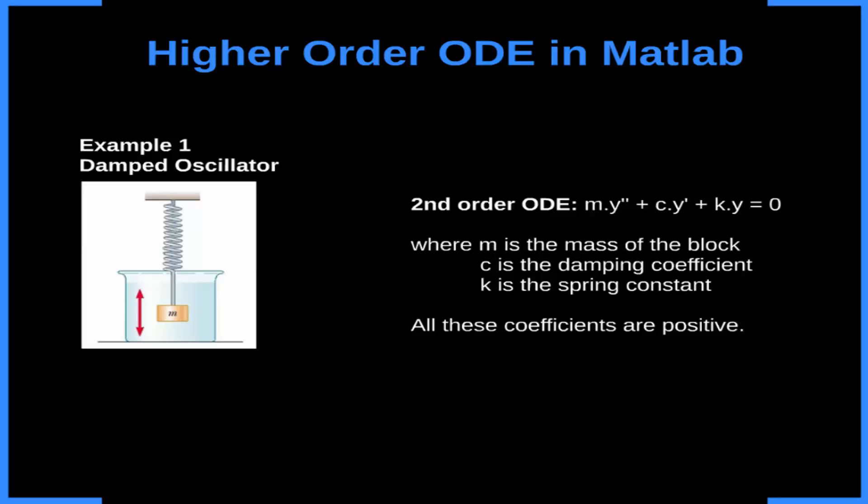For example, let's take into consideration the damped oscillator. Consider this equation as the behavior of the system where m is the mass of the block, c is the damping coefficient, and k is the spring constant, and all these coefficients are positive.